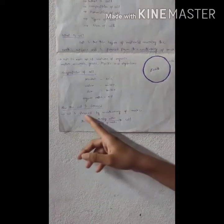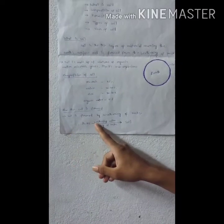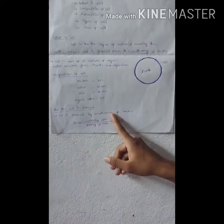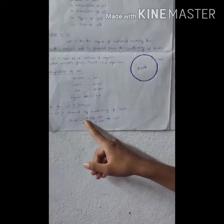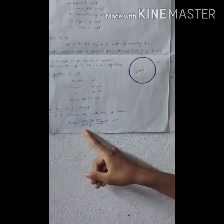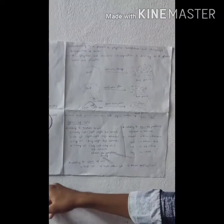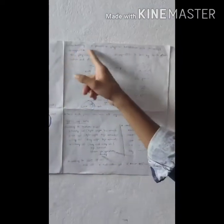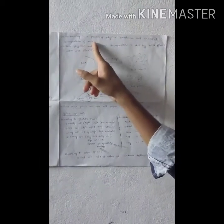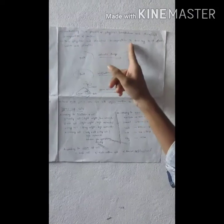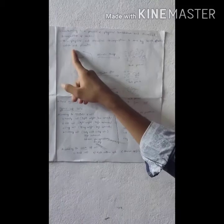Next, how is soil formed? Soil is formed by the weathering of rocks — that is, rocks are broken down through a process called weathering. Weathering is a process of physical breakdown and chemical decomposition of rocks, done mainly by wind, trees, water, and climate.